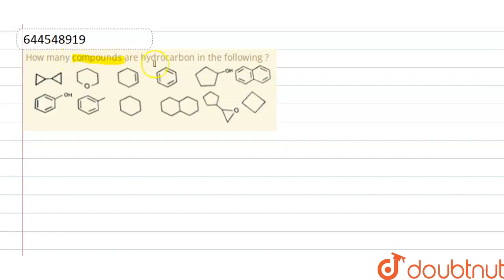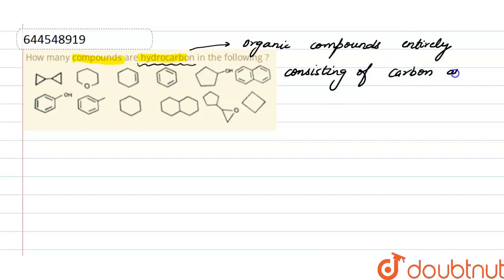First of all, what are hydrocarbons? Hydrocarbons are organic compounds entirely consisting of carbon and hydrogen.